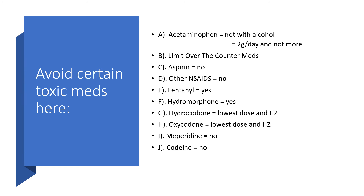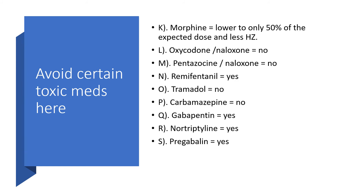You can give fentanyl for pain. You can give hydromorphone. If you have to give hydrocodone, go for the lowest dose and reduce the frequency. If you want to give oxycodone, the same — lowest dose and reduce the frequency. No meperidine here, no codeine please. If you must give morphine, reduce the dose to only 50% of the expected dose and not so frequent as well. Oxycodone and naloxone combined is not welcome here. Pentazocine with naloxone combined is not welcome here. Remifentanil could be given. Tramadol — no please.